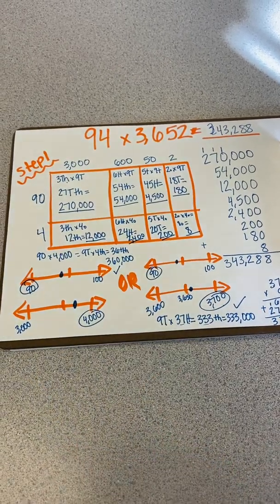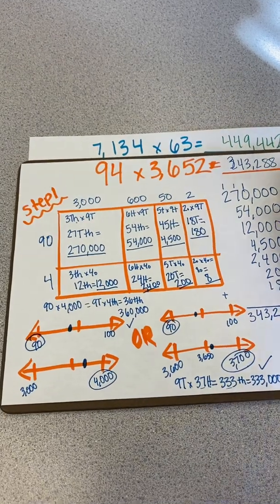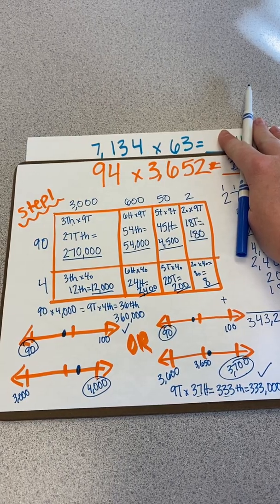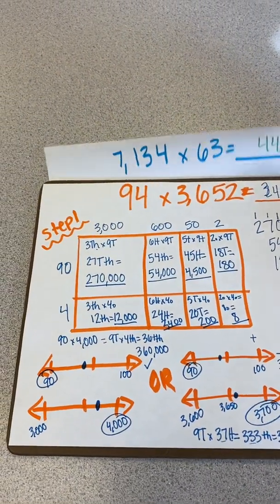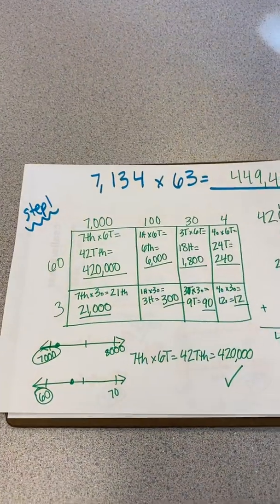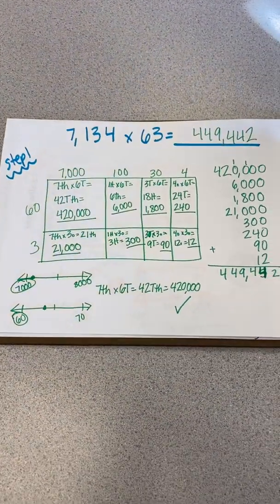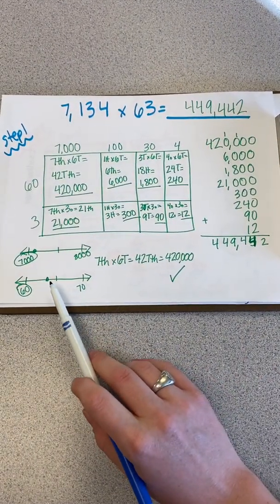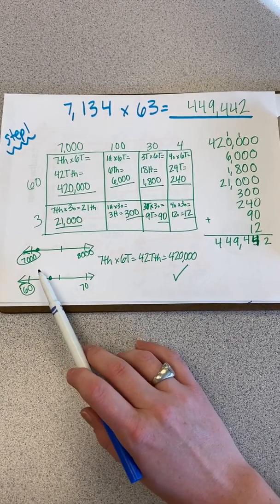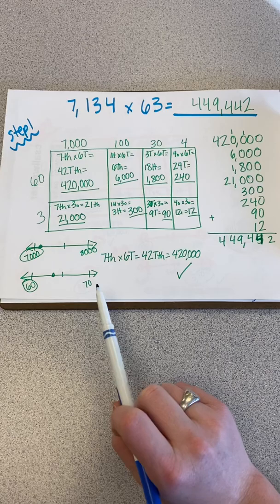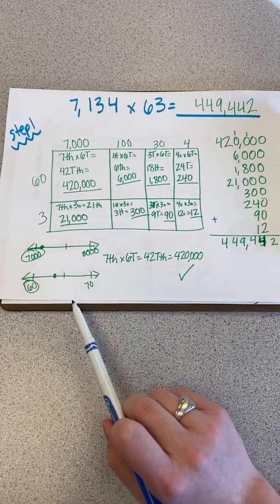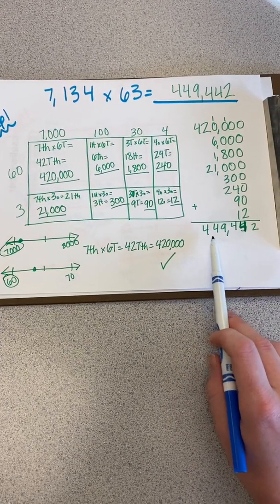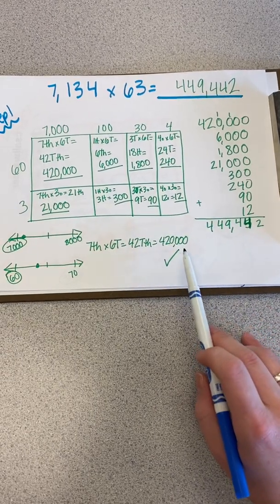Go ahead and pause the video and you have a new problem. And that is 7,134 times 63. Now that you have solved it, you can go ahead and check your work. I estimated this one to only the nearest thousand instead of doing the nearest hundred as well. So you only have to estimate one way to check, but there are multiple ways to estimate. And 420,000 was very close to my answer of 449,442. So that is a reasonable estimate.